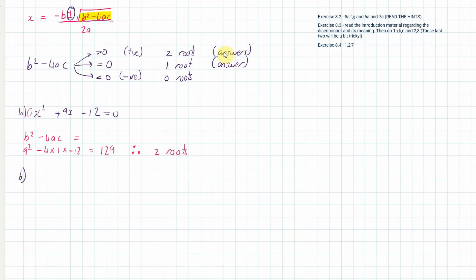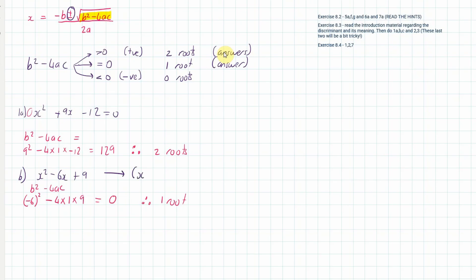Now let's try 1b: x² − 6x + 9 = 0. We calculate b² − 4ac: b is negative 6, so (−6)² minus 4 times 1 times 9 gives 36 minus 36 = 0. Therefore one root. You probably already know this — if we factorize it we get (x − 3)² = 0, so x = 3, just one result.